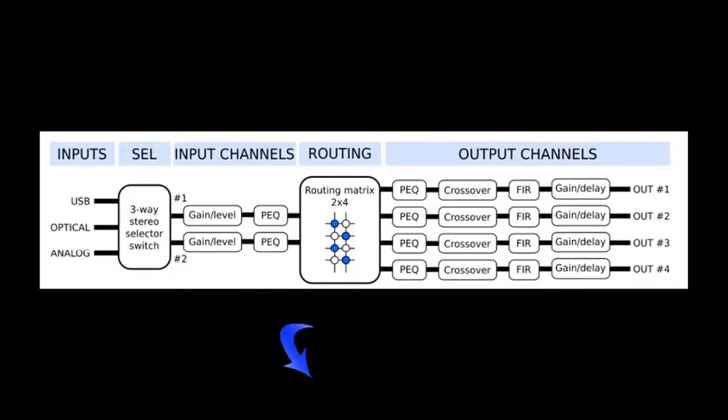The routing matrix is a critical element of the 2x4 HD. It allows the overall system to be configured in many ways. Any of the two inputs can be routed to any or all of the four outputs allowing for a wide variety of system configurations.